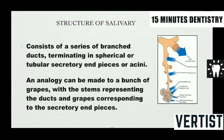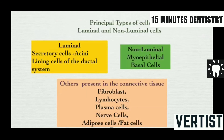The salivary gland structure consists of a series of branched ducts terminating in spherical or tubular secretory end pieces or acini. There are two different types of cells: luminal cells and non-luminal cells. The luminal cells are the secretory cells, the acini, and the lining cells of the ductal system. The non-luminal cells are the myoepithelial cells and basal cells.